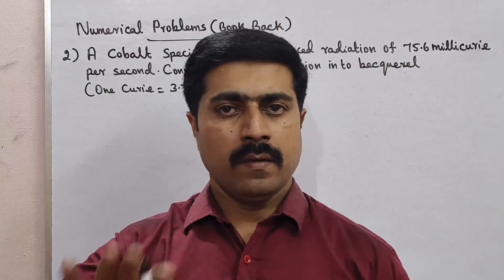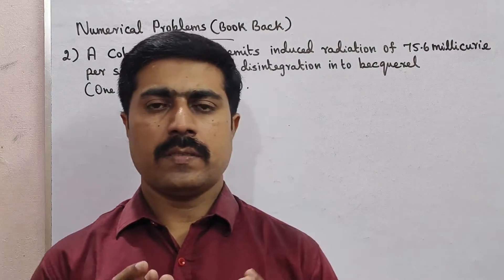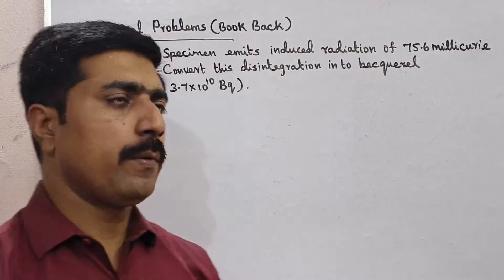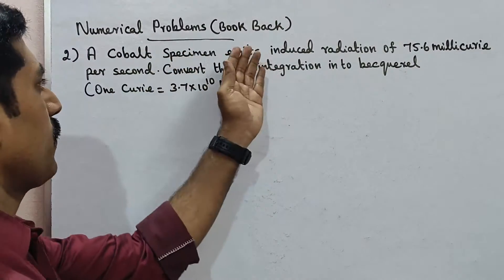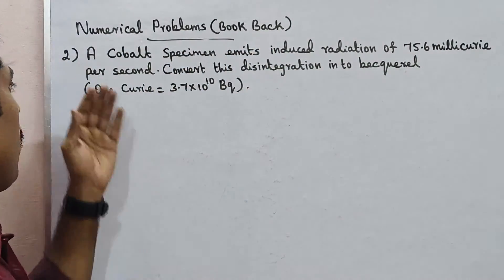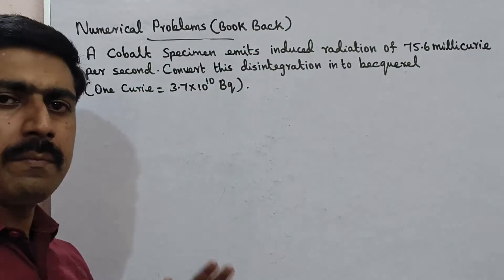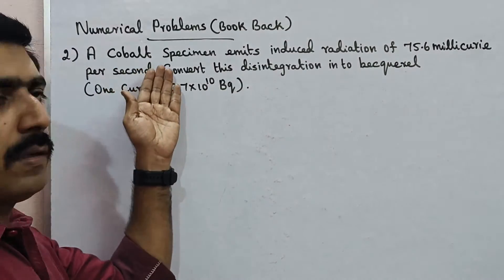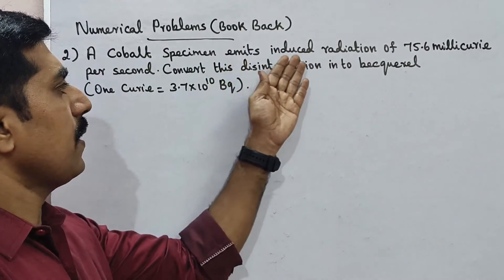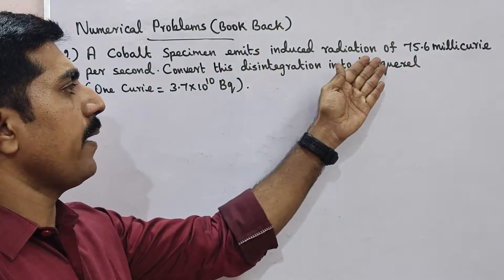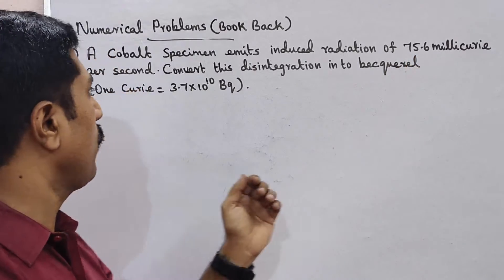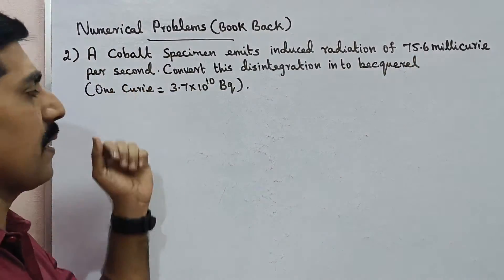Hi students, now we are going to talk about numerical problems. Second problem, from the symbol — a cobalt specimen emits induced radiation of 75.6 millicurie per second.